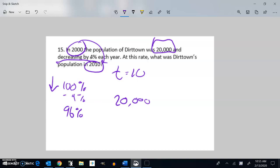So that means it will be 96% of what it was. So I'll think of that as my multiplier, 0.96. And it's going to do that for however many years we let it happen. It happens for 10 years.